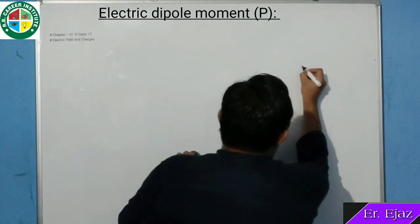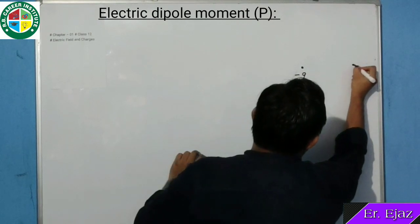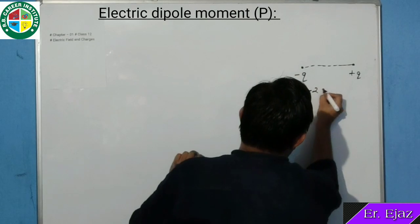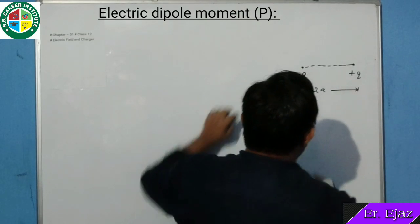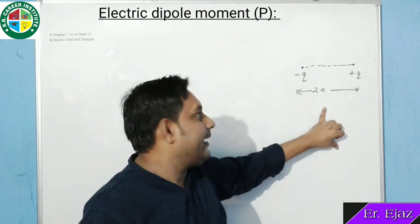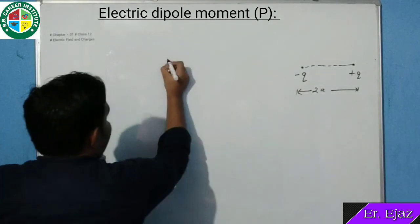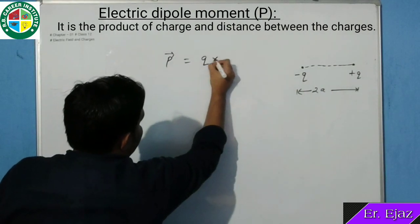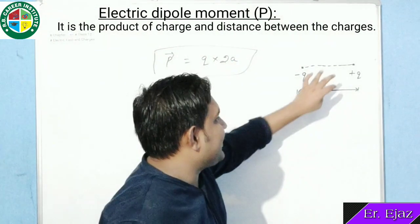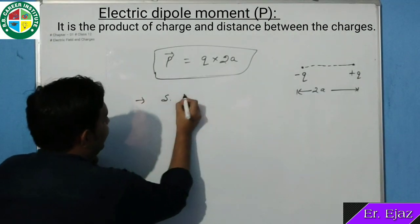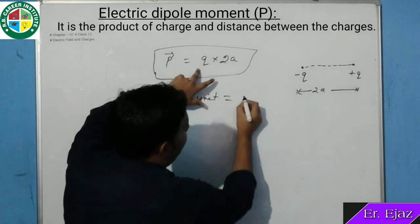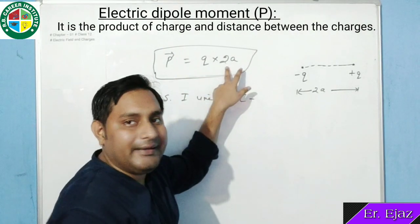What is electric dipole moment? हमारा एक charge है minus Q और एक charge है plus Q। Distance of separation इन दोनों के बीच का 2A है। तो dipole moment क्या होता है — it is the product of charge and distance between them। दोनों charges के बीच का distance 2A है और charge Q है।